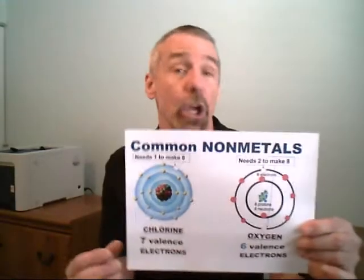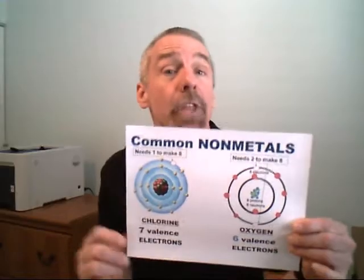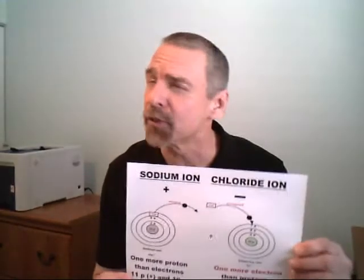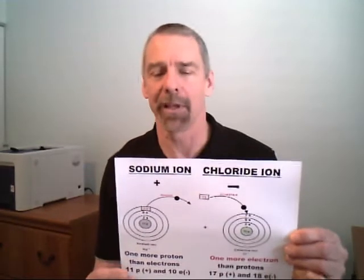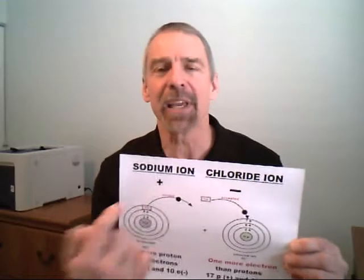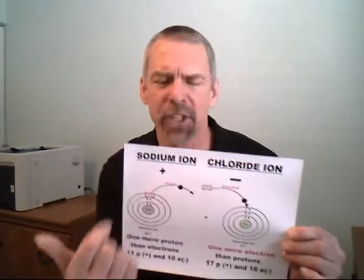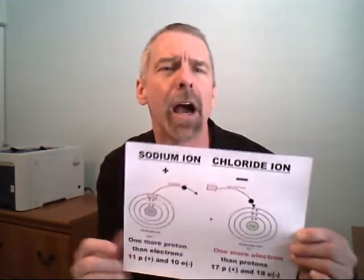The metal might have one, two, or three electrons for the non-metal to receive. It all depends on what's needed to make the number eight for the non-metals. And if it happens for them, they both become ions — charged atoms.